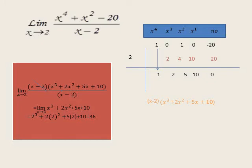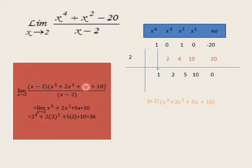From long division we write two brackets. The first bracket is (x minus 2) — the zero factor. The second bracket uses the quotient coefficients: x³ plus 2x² plus 5x plus 10. Cancel (x minus 2) with (x minus 2). The result is x³ plus 2x² plus 5x plus 10. By substituting x equals 2: 8 plus 8 plus 10 plus 10 equals 36.